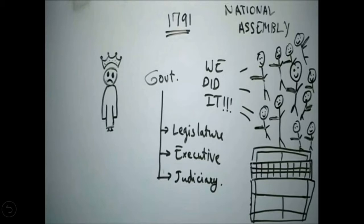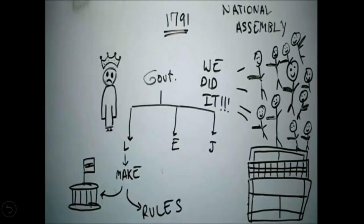They divided the powers of the national assembly into three: legislature, executive, and judiciary. The main function of the legislature is to make rules. The executive's main function is to implement the rules made by the legislature. The judiciary — that is the courts — has the power to punish people who are not following or accepting these rules and regulations.